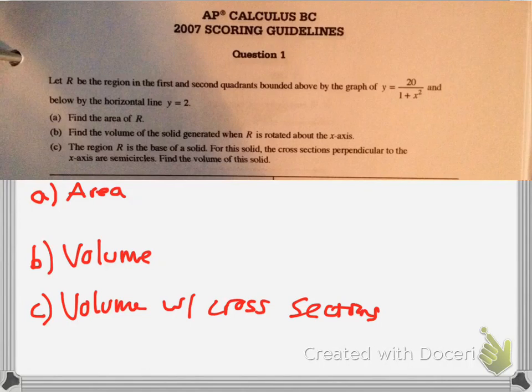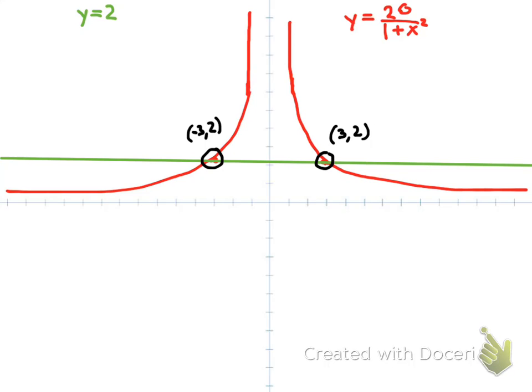For the first thing you might want to do is graph the functions. In red is the 20 over 1 plus x squared, and the green is y equals 2. To find where they intersect, you can either, if you have a graphing calculator, you can do second calculate intersect, or the best way to do it, if you don't have a calculator, and if you want to understand conceptually,